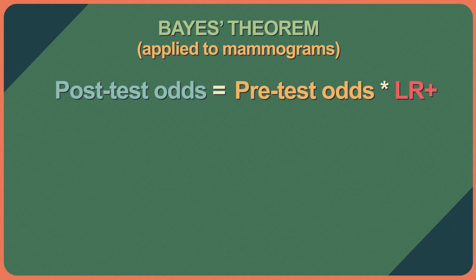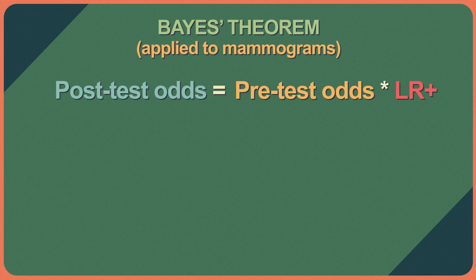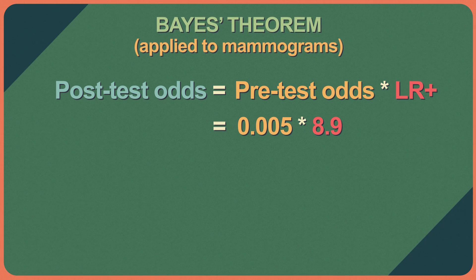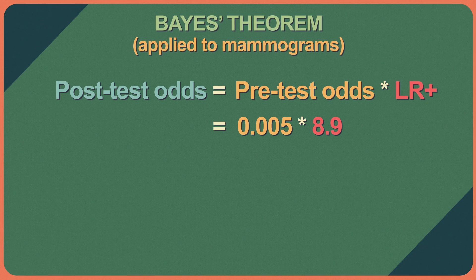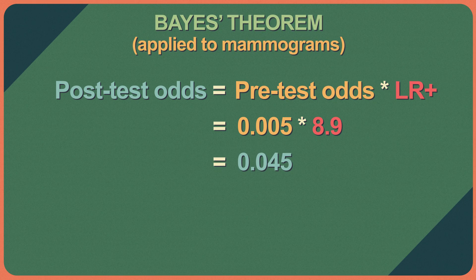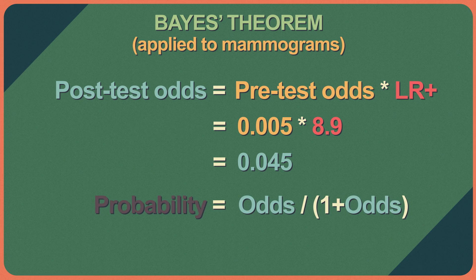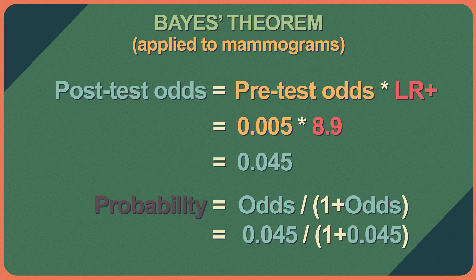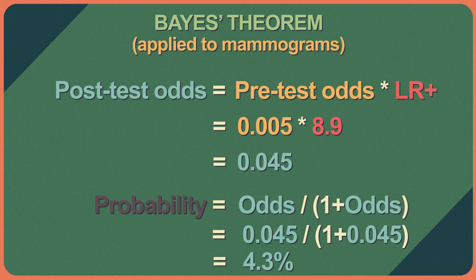So let's say the mammogram is positive. According to Bayes' theorem, post-test odds equals pre-test odds times likelihood ratio. In this case, post-test odds equals 0.005 times 8.9. The post-test odds, therefore, are 0.045, or 4.5%. You can convert this back to a probability by the equation: probability equals odds over 1 plus odds. In this case, 0.045 over 1 plus 0.045, or 4.3%.